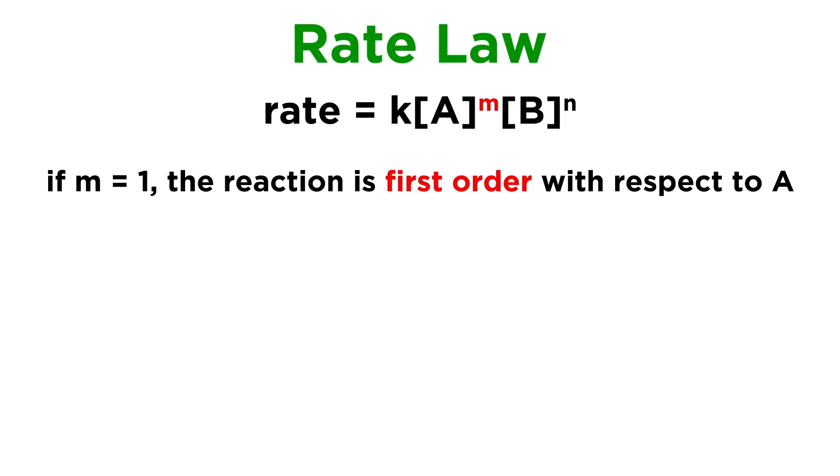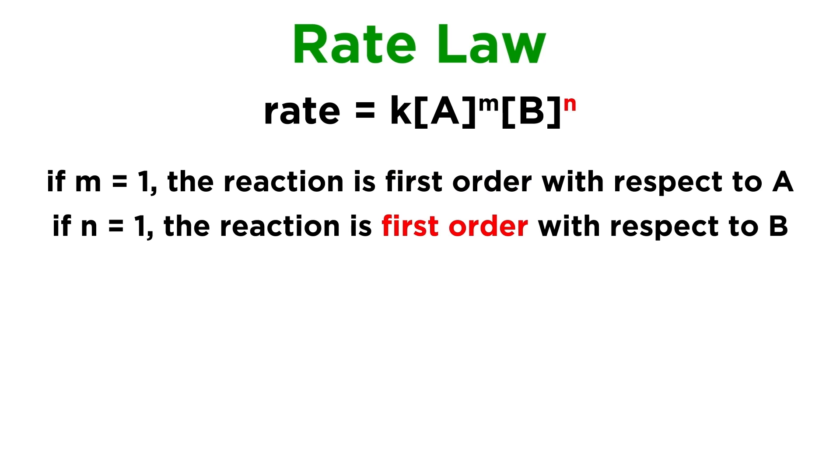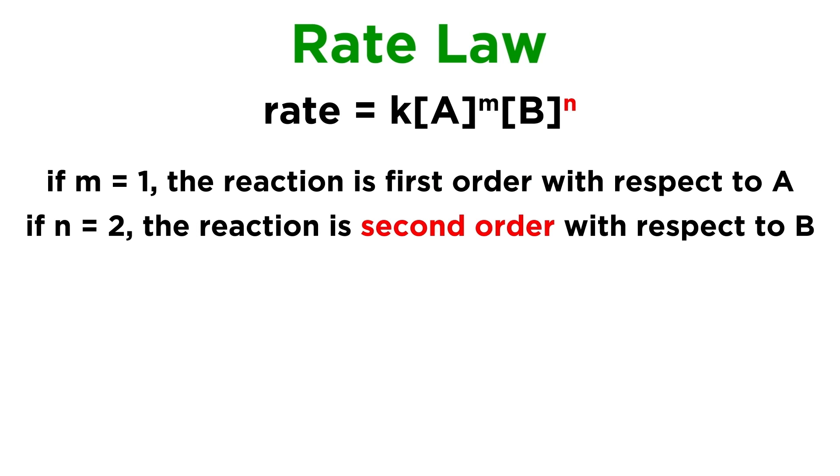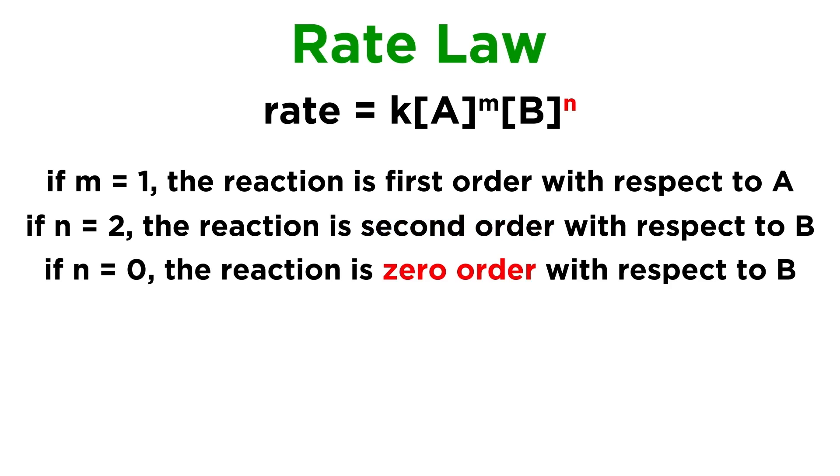If M is one, we would say the reaction is first order with respect to A. If N is one, it is first order with respect to B. If N is two, it would be second order in B. If it was zero, we would say it was zero order in B.